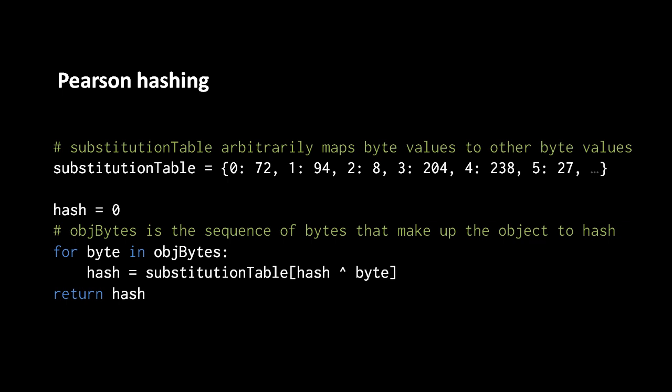If we want a truly generic hash function, the obvious thing to do is to create a hash function that works by processing the individual bytes that make up that object. One of the simplest such techniques is called Pearson hashing, where we define a substitution table in which every possible byte value maps to a different byte value. Here, for example, we have the value 0 mapped to 72, 1 to 94, 2 to 8, 3 to 204, 4 to 238, 5 to 27, and so forth. No two keys in this table should map to the same value. This table is meant to be random, and there's no standard table for Pearson hashing. Only when two Pearson hashing algorithms use the same table do they produce all the same hashes.